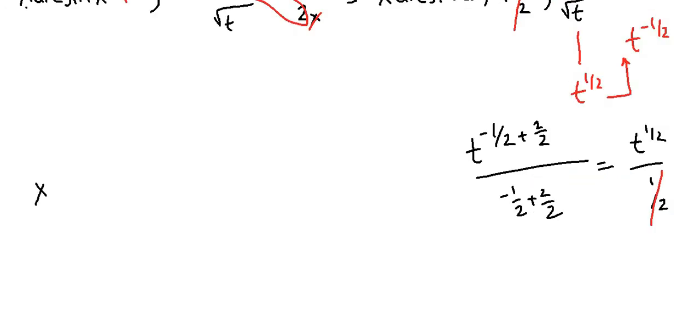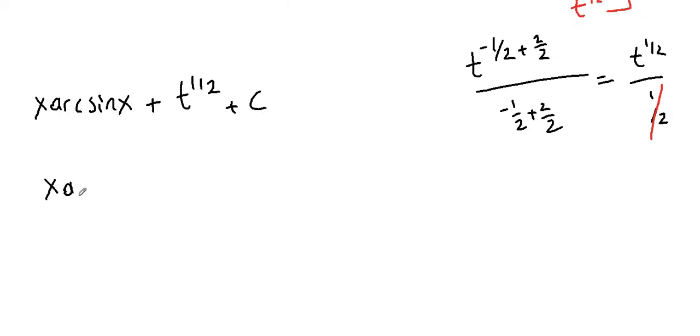So we have x arcsin(x) plus t to the 1 half plus c. And we can bring t back, which was 1 minus x squared. So this is the answer.